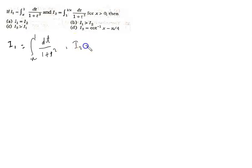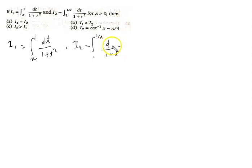So I1 is equal to — the limit is x tends to 1 of dt by 1 plus t squared. And I2 is also given: the limit is 1 tends to 1 by x of dt by 1 plus t squared.